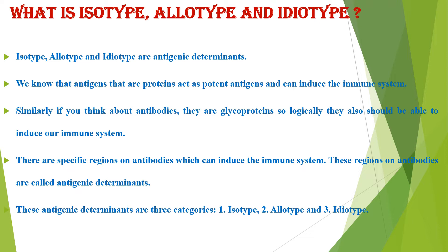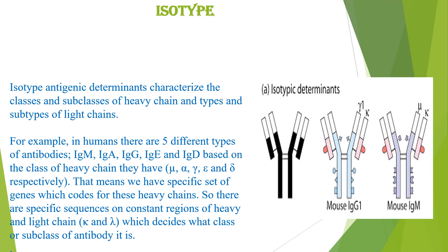Antigens that are proteins act as potent antigens and can induce the immune system. Similarly, antibodies are glycoproteins, so logically they should also be able to induce our immune system. There are specific regions in antibodies which can induce the immune system. These regions are called antigenic determinants, and accordingly they are divided into three categories: isotype, allotype, and idiotype.